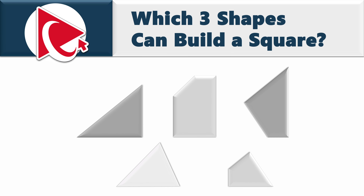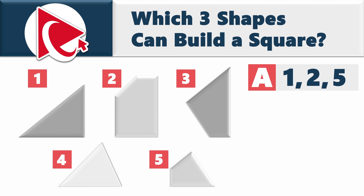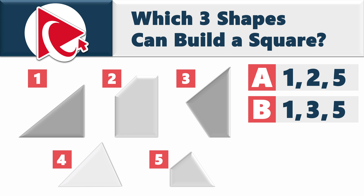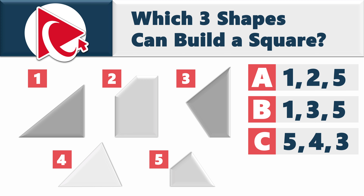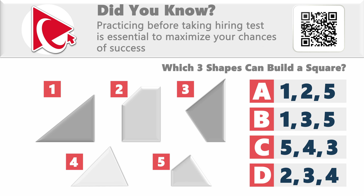You're presented with five shapes — one, two, three, four, and five — and you need to determine which three shapes can build a square. Choice A: shapes one, two, and five. Choice B: shapes one, three, and five. Choice C: shapes five, four, and three. Choice D: shapes two, three, and four. You might have already tried solving this in your head.